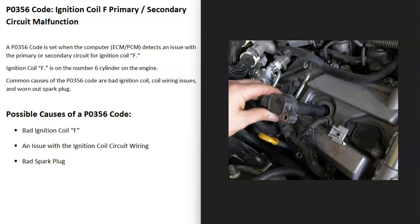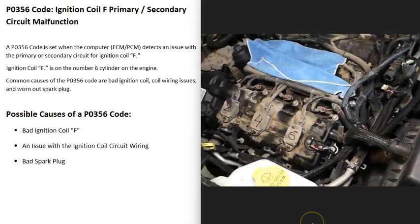You can also test these with a multimeter. The first cause is a bad ignition coil F. The next thing that causes issues is the wires going to the ignition coil. If there's anything wrong with these wires—an open, a short, or a bad connection—that's going to cause problems.